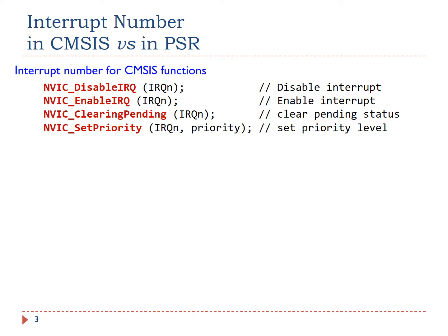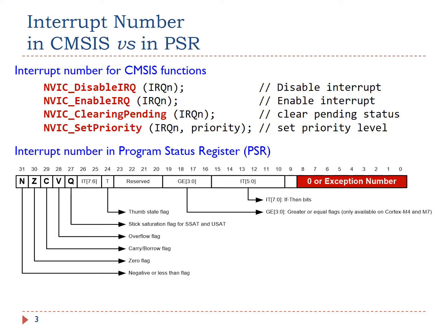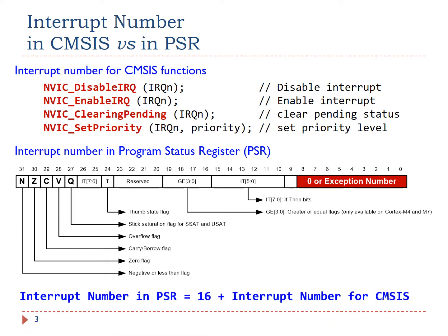Several CMSIS functions use the interrupt number as an input parameter, such as NVIC_DisableIRQ and NVIC_EnableIRQ. NVIC stands for Nested Vector Interrupt Controller. When an interrupt is serviced, the current interrupt or exception number is recorded in the Program Status Register. However, the definition of interrupt numbers in PSR is different from CMSIS — the PSR interrupt number equals 16 plus the CMSIS interrupt number.